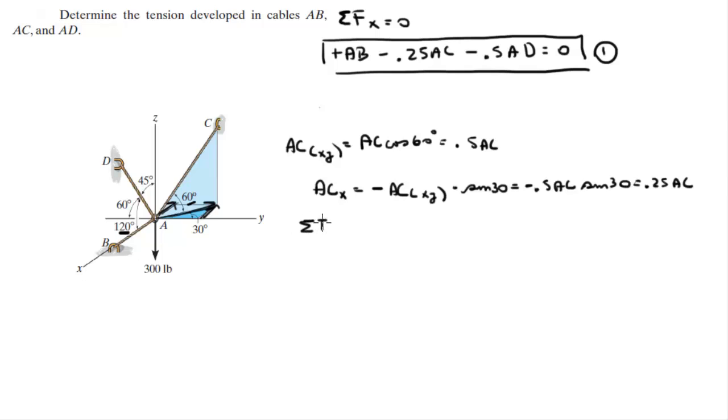Sum of the forces on the Y is equal to zero. On the Y, we have AC. The Y component right here is given by the same projection, which is 0.5 AC times the cosine of 30.